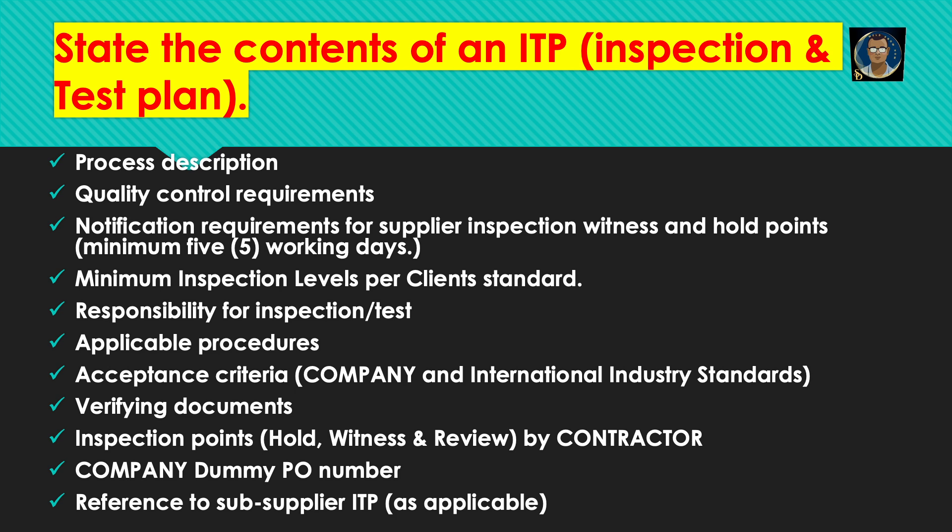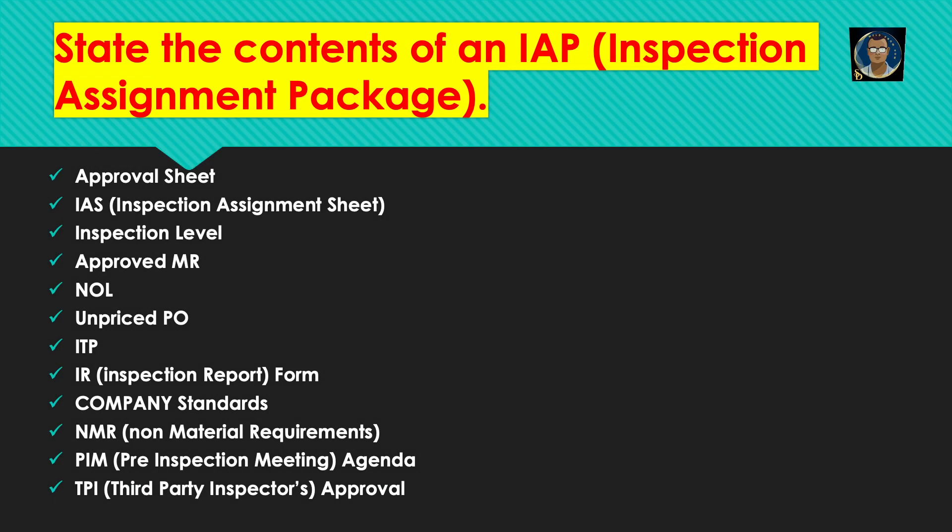The ITP also includes the company dummy PO number and a reference to sub-supplier ITP if applicable. State the contents of an IAP — Inspection Assignment Package: approval sheet, IAS (inspection assignment sheet), inspection level, approved MR, NOL, unpriced PO, ITP, IAR form, company standard, NMR, PIM agenda, and TPI approval.